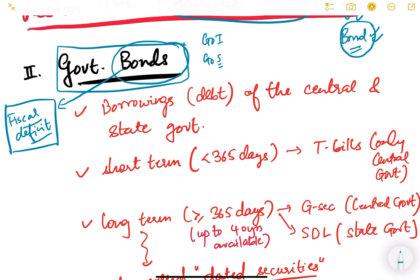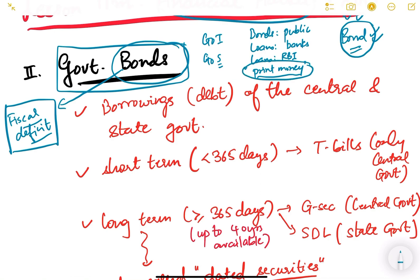There are different ways to finance the fiscal deficit. First, borrowing from the public by issuing bonds. Second, the government can take loans from banks, just like private companies. Third, it can take loans from RBI. Fourth, it can print money — meaning RBI is asked to print new money and give it to the government, which is again a kind of loan from RBI but not from the common public or any security issuance.